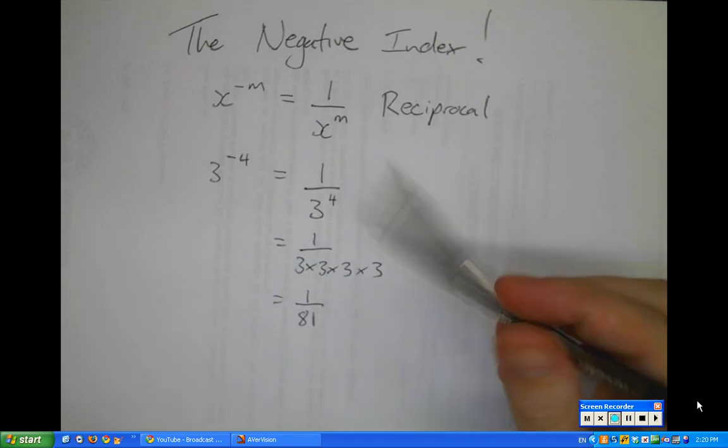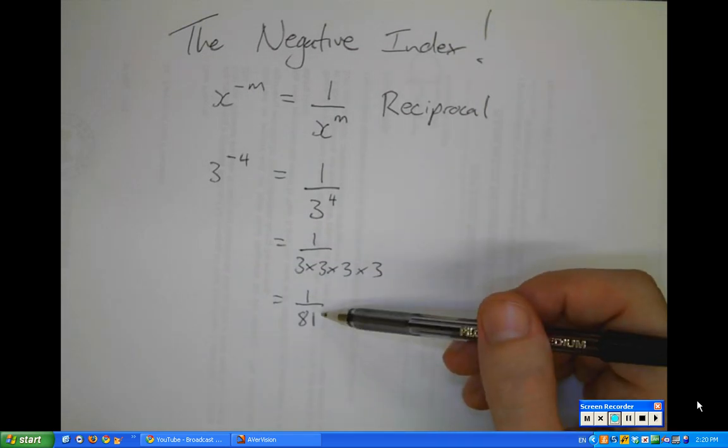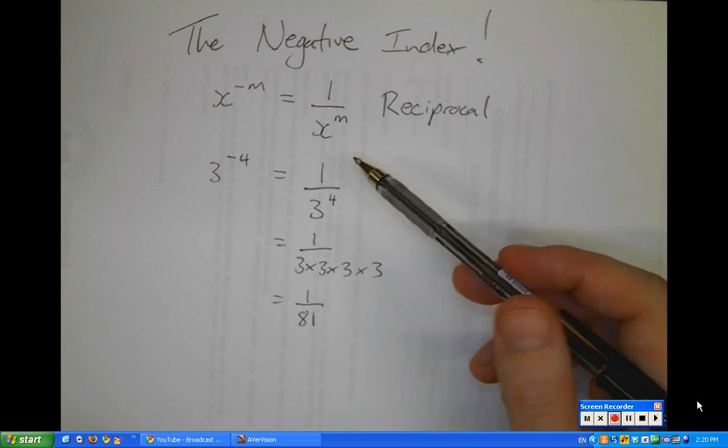So you can see in this instance, 1 over 81 is going to be quite a small number. Normally we think of powers as giving us really large numbers.